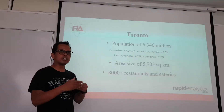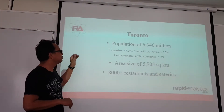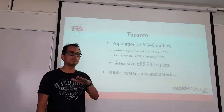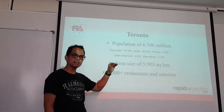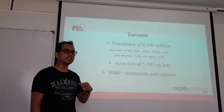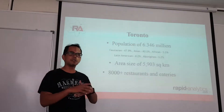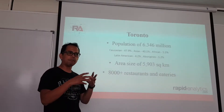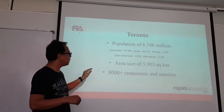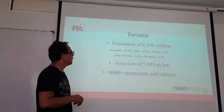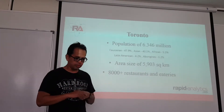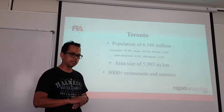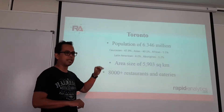The city the client is looking at to open a restaurant is Toronto. Toronto has a size of 5,903 square kilometers, which is a little bit smaller than Negri's Milan, but it has a population of 6.346 million — six times more than Negri's Milan. Within that area there are 8,000-plus restaurants and eateries. What is unique about Toronto is that it is a city of immigrants, with a large Asian population — and this point will be important later on.